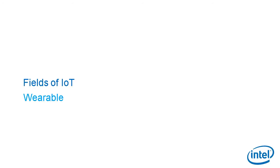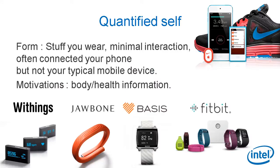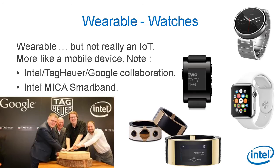Now let's look at the various fields of IoT, starting with wearables. The first motivation to wear an IoT solution is to quantify your activity — something you wear with minimal interaction, often connected to your phone with Bluetooth, without a touchscreen. Motivations include tracking your health or physical activity. One of the first great products was the Nike Plus iPod solution, and nowadays we have things like Jawbone, Fitbit, and Basis, which is part of Intel. Then you have smartwatches — they're not really pure IoT solutions because they have a complex touchscreen and apps requiring a lot of interaction, making them more like a small mobile device.